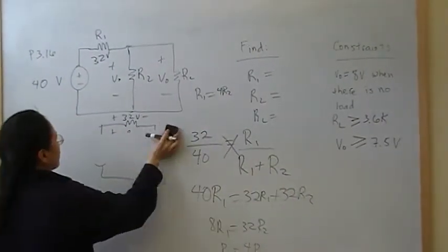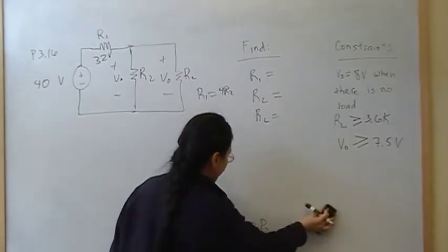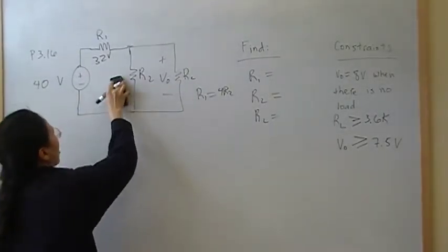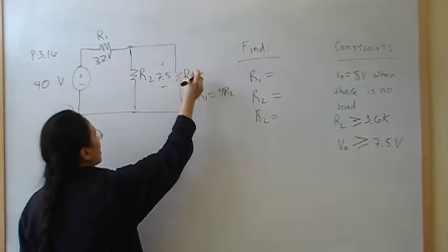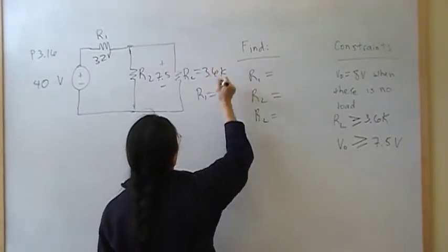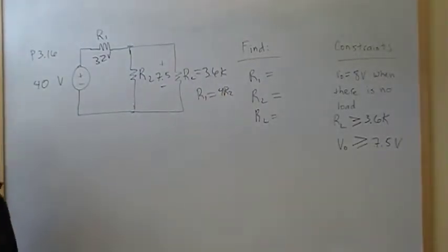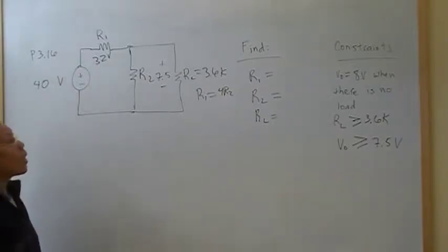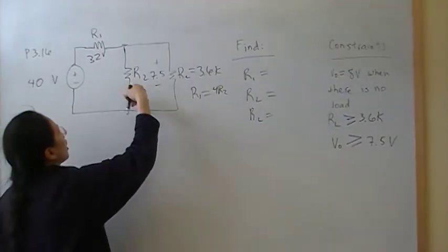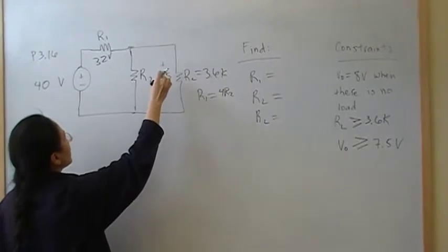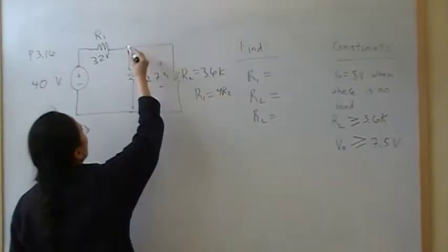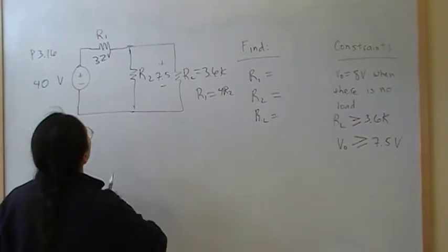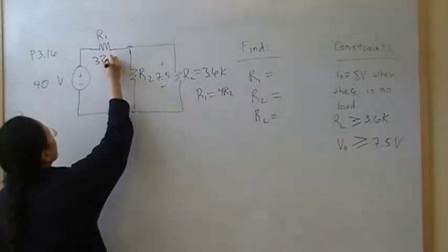Now, when there is a load connected to this, we have some constraints across it. Our constraints are that this has to be no less than 7.5 volts, and this has to be greater than 3600 ohms. And so, since these are the minimum constraints, we're going to find that condition, and then everything else is just going to have to be above. So let's solve for this. First, we need to find the equivalent resistance. And once we find this equivalent resistance, we're going to use the concept of the voltage divider circuit in order to solve for it. Now, notice that if this whole branch has to be 7.5, then this is now 32.5.